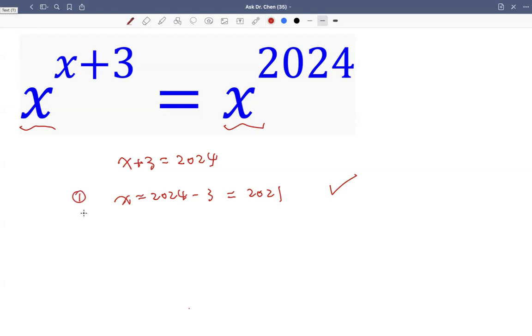But is this all? No. We need to try 3 more. Let's see x equals 0. If x equals 0, we have 0 raised to 3 on this side and 0 raised to 2024 on the other. Of course, 0 raised to anything is 0, so that is a solution.